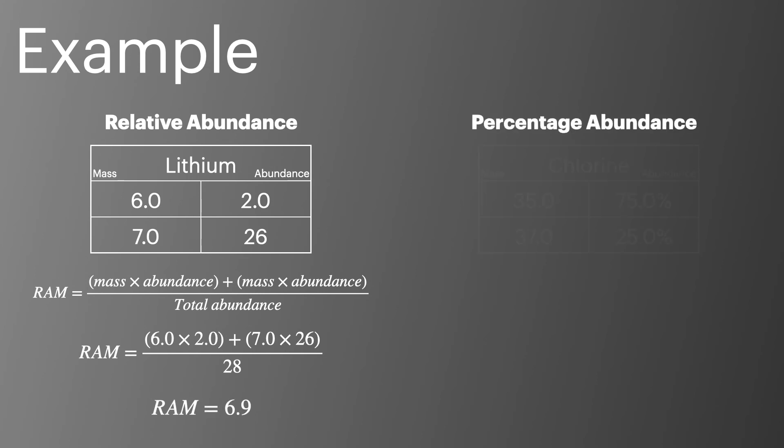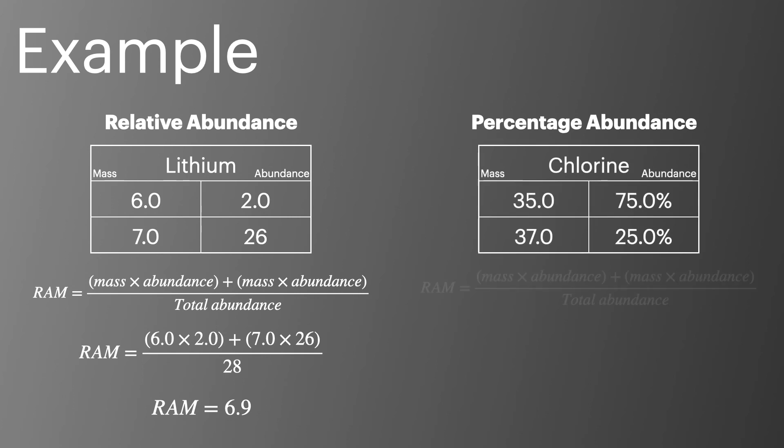In the second example, abundance is given as a percentage. This time the total abundance is going to be 100, and we can calculate the relative atomic mass to be 35.5.